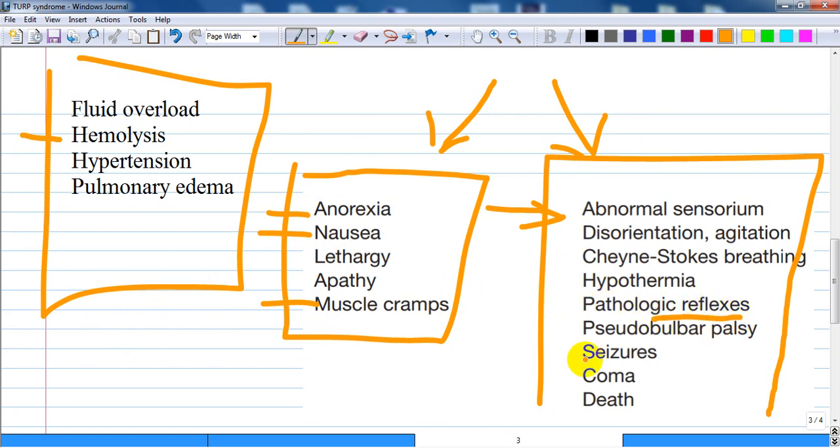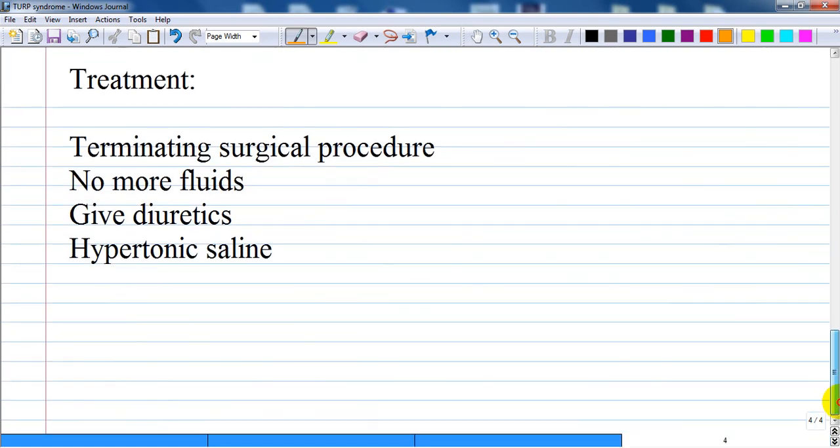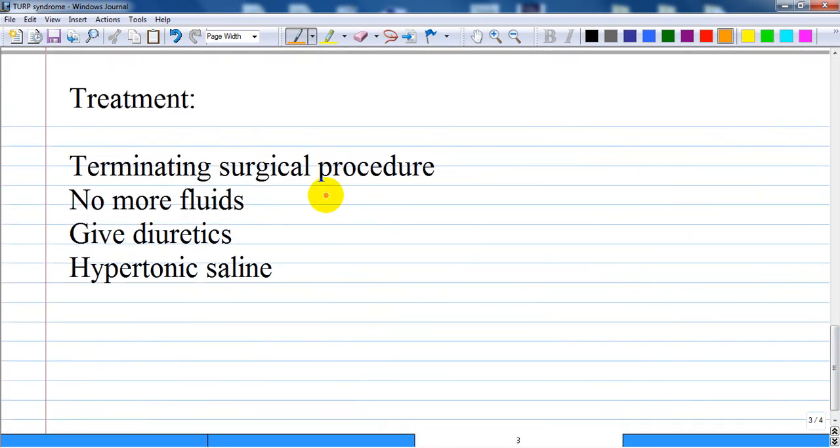What is the treatment or management of TURP syndrome? For patients under regional anesthesia, as they are undergoing TURP syndrome, you should measure electrolytes, especially serum sodium concentration and osmolality.